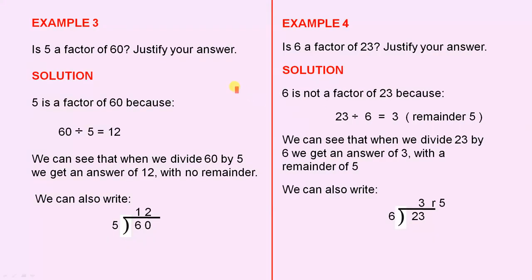Example 3. Is 5 a factor of 60? Justify your answer. 5 is a factor of 60 because 60 divided by 5 equals 12. We can see that when we divide 60 by 5, we get an answer of 12 with no remainder. We can also write 5 divided into 60 goes 12.